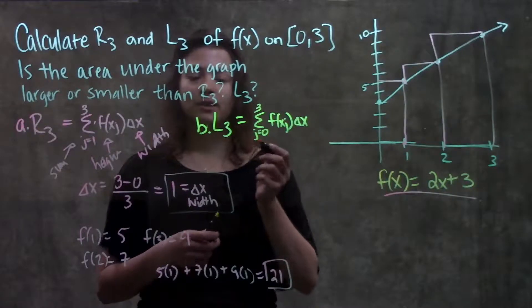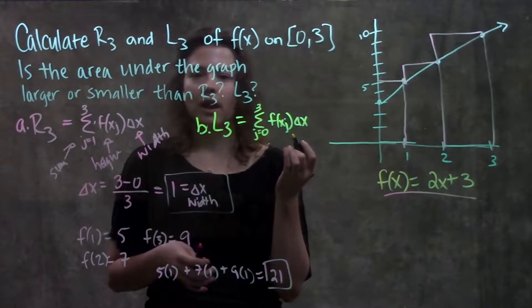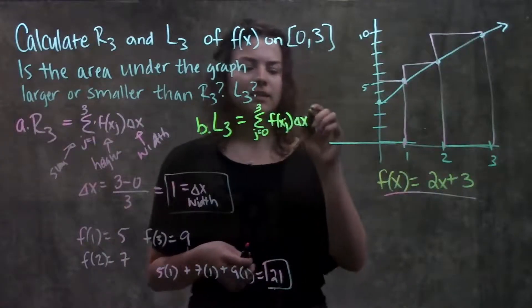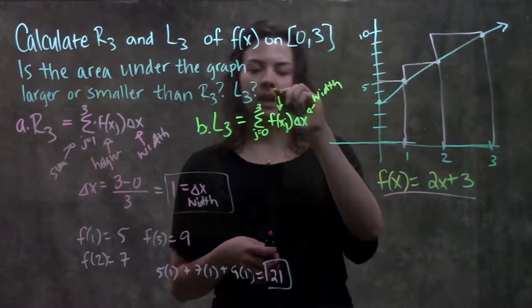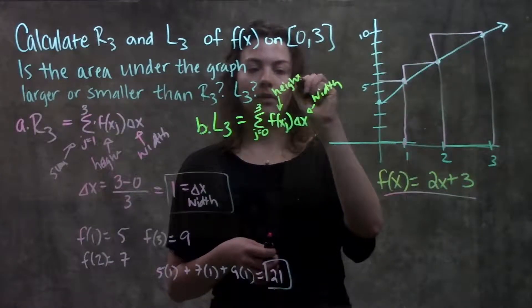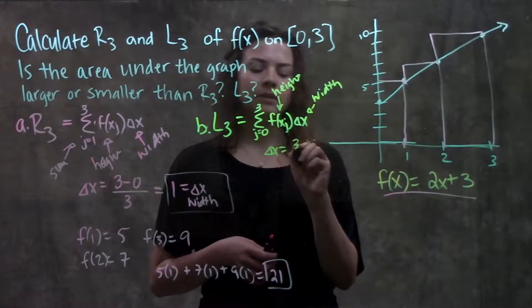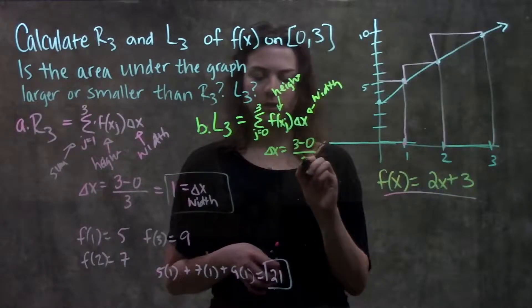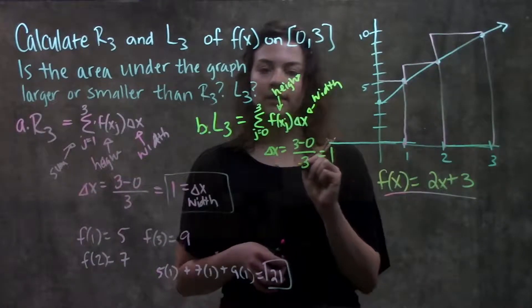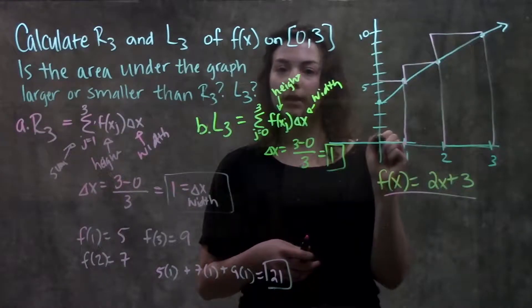Now we're going to do the same process using our left endpoint. For our left endpoint we have a similar formula given in this section. Same thing, delta x is our width and f(x sub j) is the height of each rectangle. We find delta x the same way: difference in the interval divided by number of rectangles, which is 3 again. So my delta x in this case is also 1. And going over to my function when I plot this out...